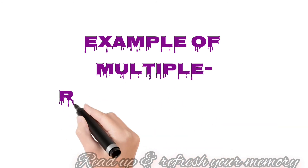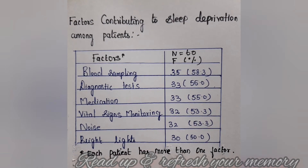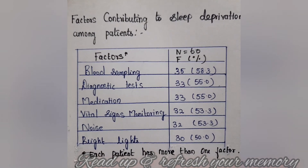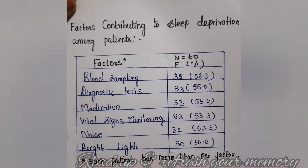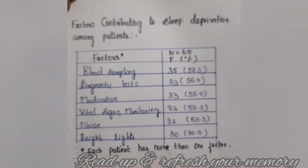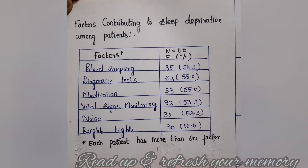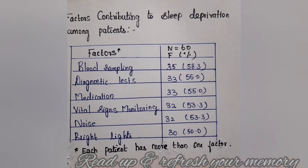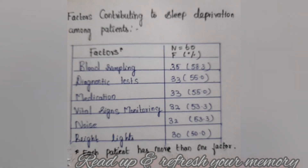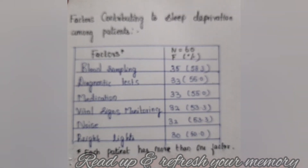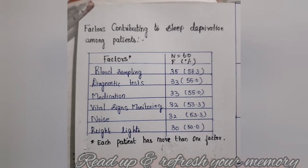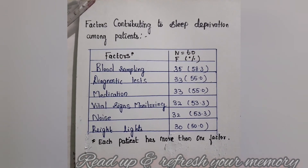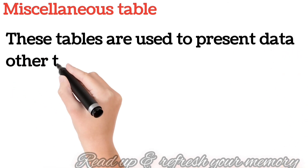An example of a multiple response table is given below. Here, the factors contributing to sleep deprivation among patients are mentioned: blood sampling, diagnostic tests, medication, vital signs monitoring, noise, and bright light. Each patient may have more than one factor, so only the percentage is calculated. This is called a multiple response table.